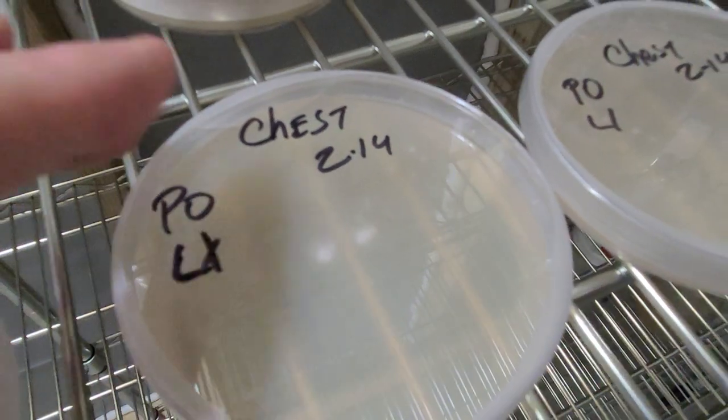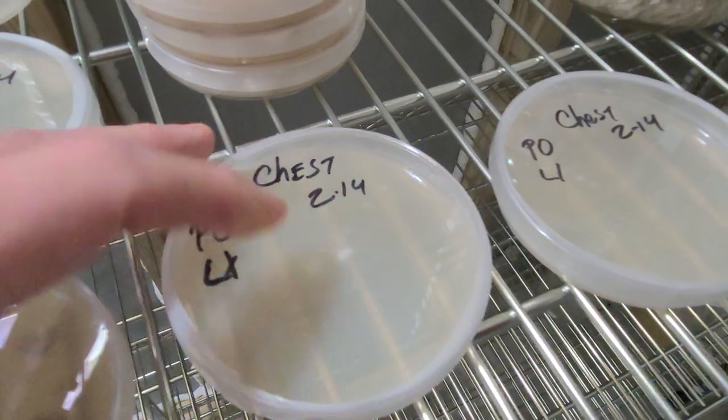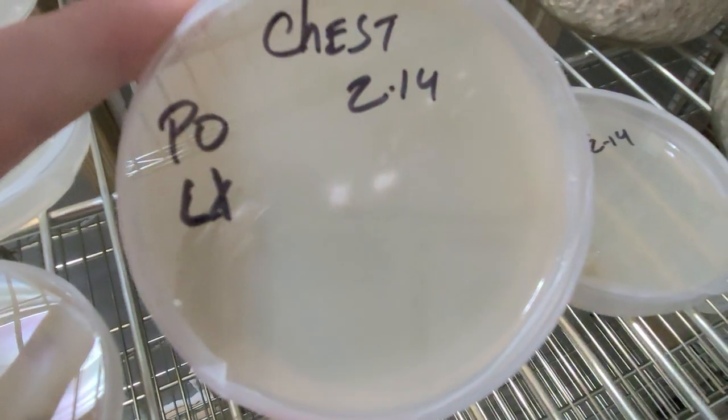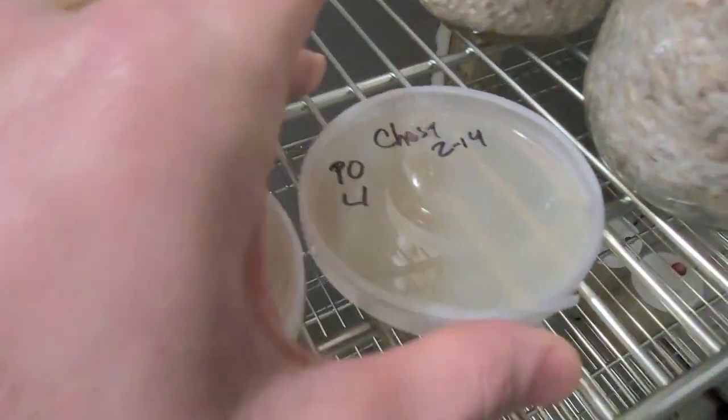If there were any competitors growing, they would be showing up as dark spots or some kind of discoloration. As these plates colonize and the mycelial mat establishes, a visual inspection on both sides of the plates ensures no hidden contamination.